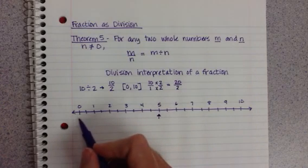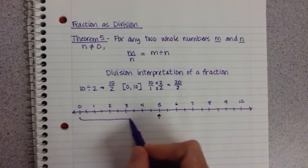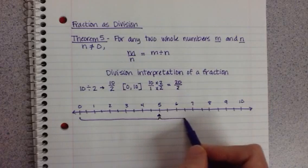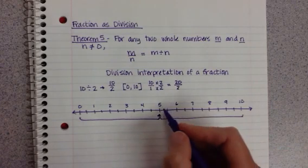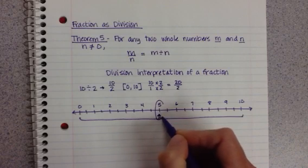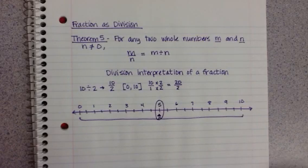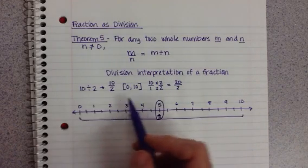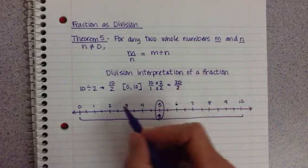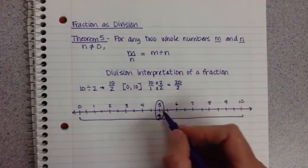Guess where it lands. So here's my 1 group, and here's my other equal group. But where it lands is right here. And that is, if you check it, that is the answer of 10 divided by 2 is 5.